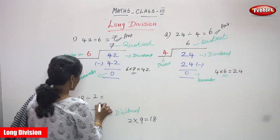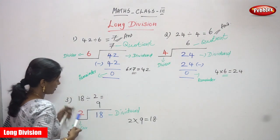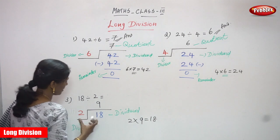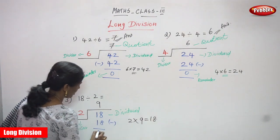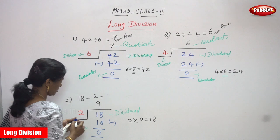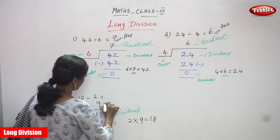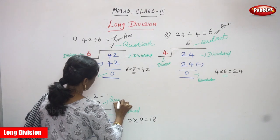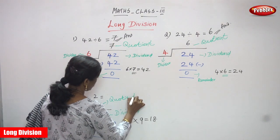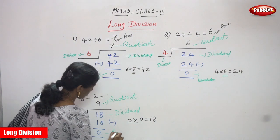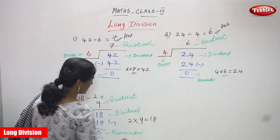So you must write the quotient on the top. 2 9s are 18 — again you have to write 18. So 18 minus 18 you can get 0. So 9 is the quotient and 0 is the remainder.